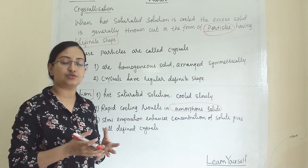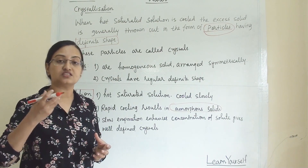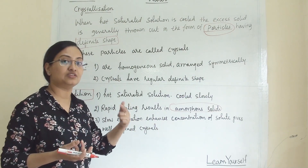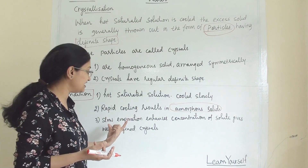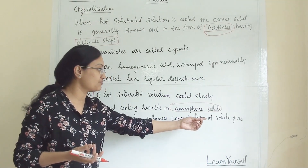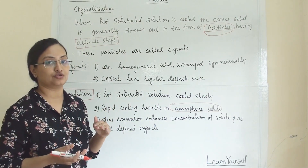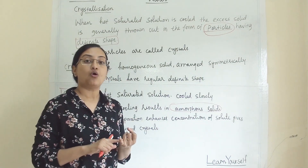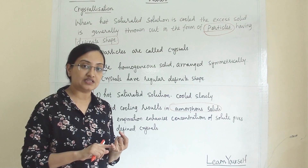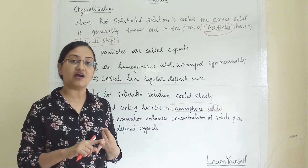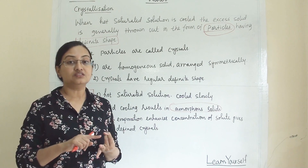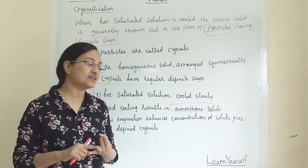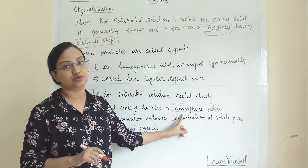While making the hot saturated solution, we have to evaporate some of the solvent so that we get a crystal. That evaporation and heating should be very slow so that the concentration of solute is maintained in the solution. These are the important conditions: evaporation should be on a low flame with slow, gradual heating. And the same way, after making the hot saturated solution, cooling should be done gradually. You cannot cool it rapidly, otherwise you will get an amorphous solid instead of crystals.